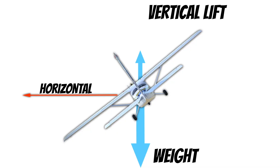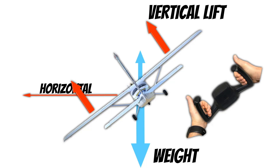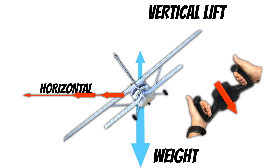To keep yourself from descending, you need to increase the lift your wings are producing. We simply pull back on the yoke and increase our angle of attack. This is what turns our airplane and keeps us from descending — but when we do this, something really interesting happens.